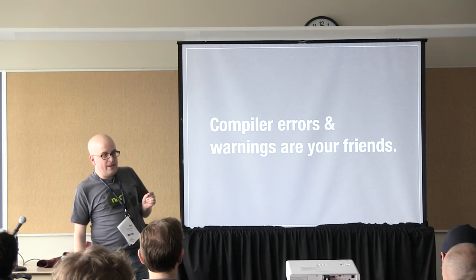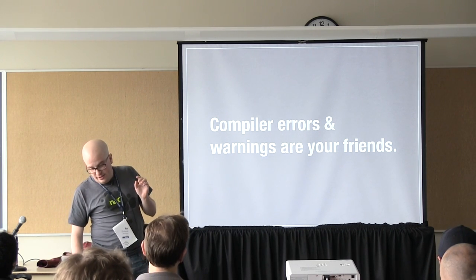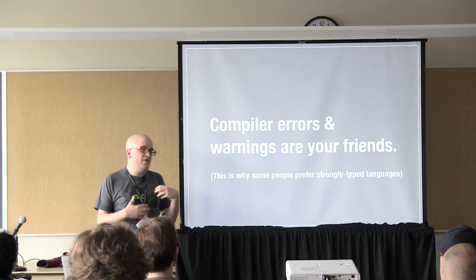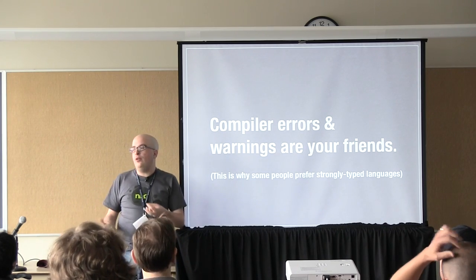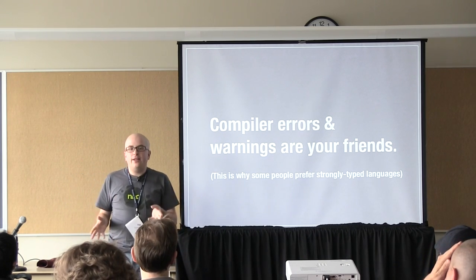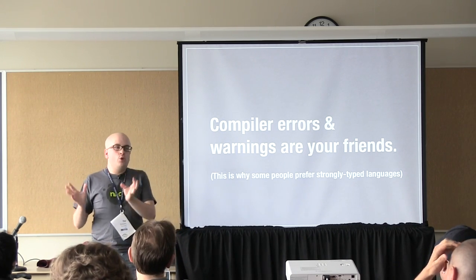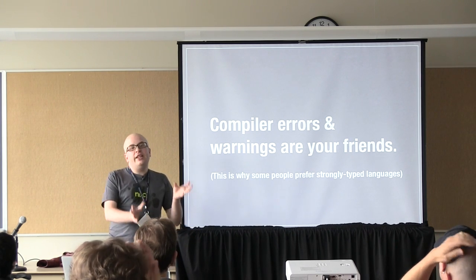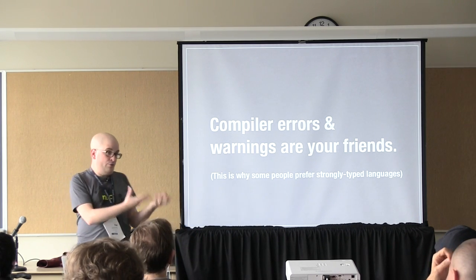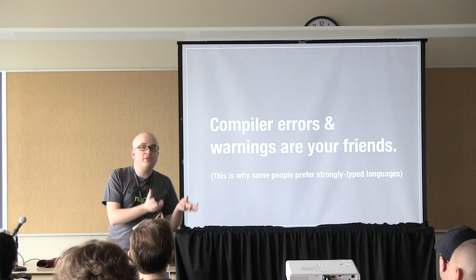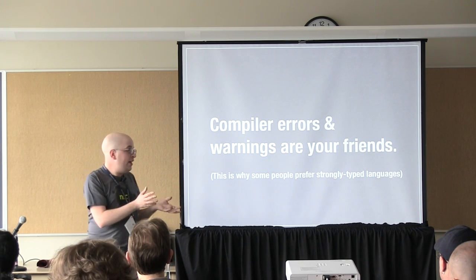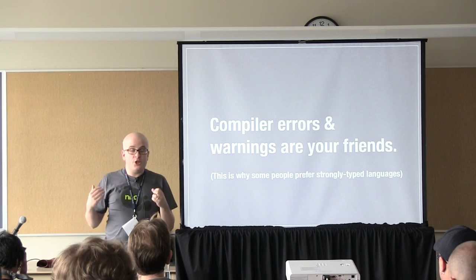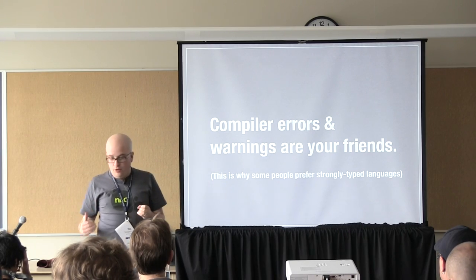One of the problems with dynamic languages — and this is a reason why some people prefer strongly typed languages such as the C family or Haskell — is that more errors are moved from runtime to compile time. If you're using a dynamic language like Ruby or JavaScript, most type-checking errors won't be caught at compile time and will be much harder to fix in the long run.